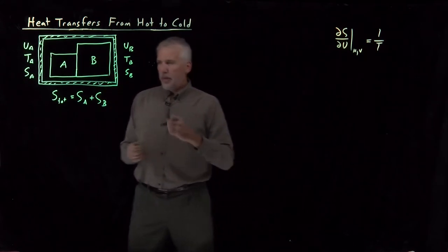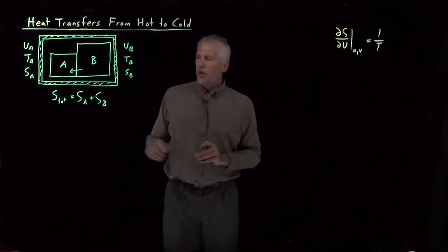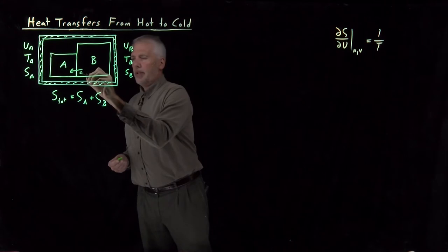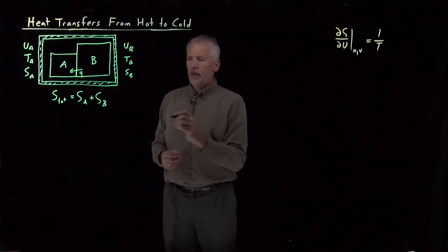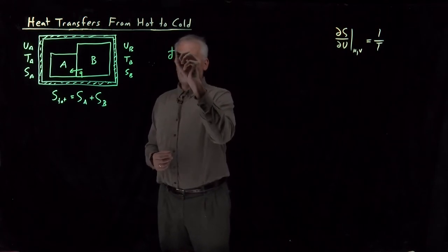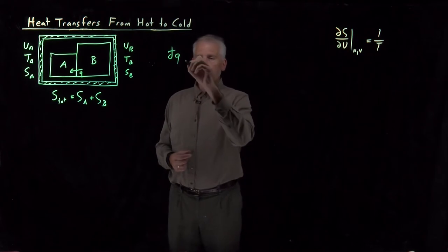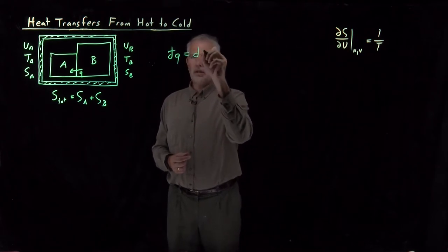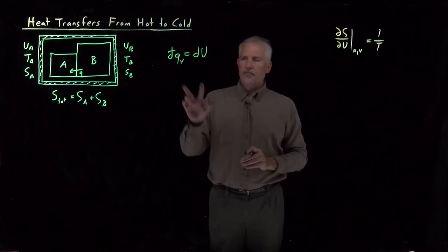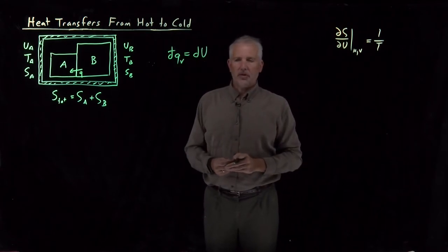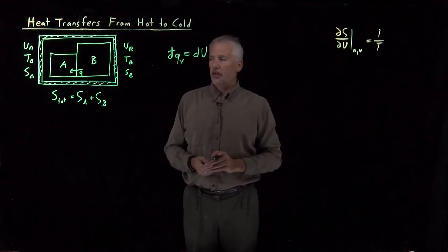So if we go back to the question of whether heat is going to transfer from A to B or vice versa, in what direction will heat transfer? Since we're doing this process at constant volume, heat transfer at constant volume is equal to the change in internal energy. So whatever the amount of heat transfer is also the same as the change in the internal energy.